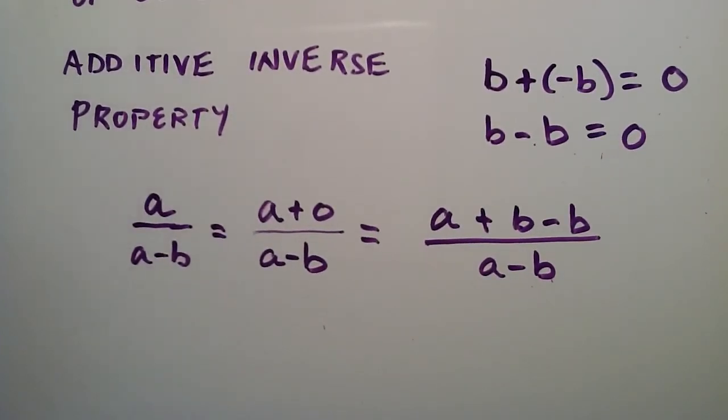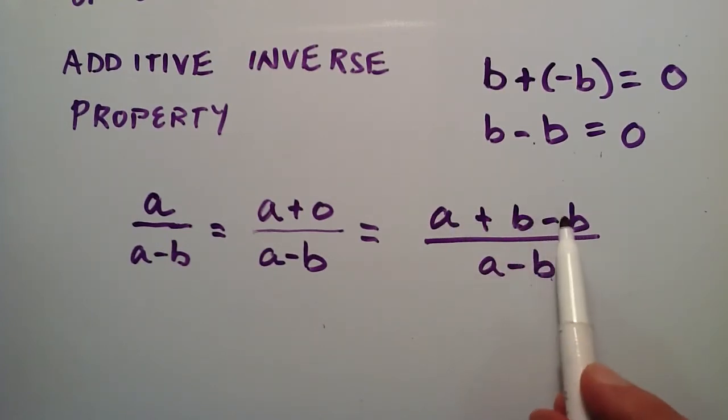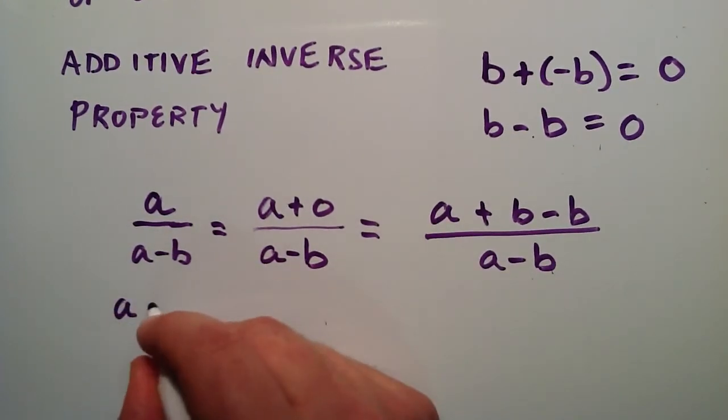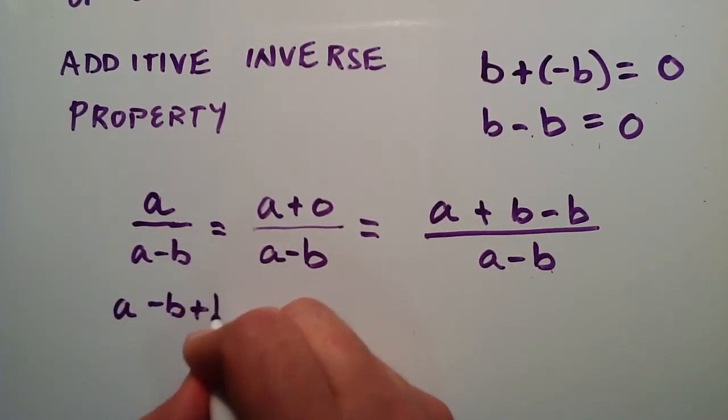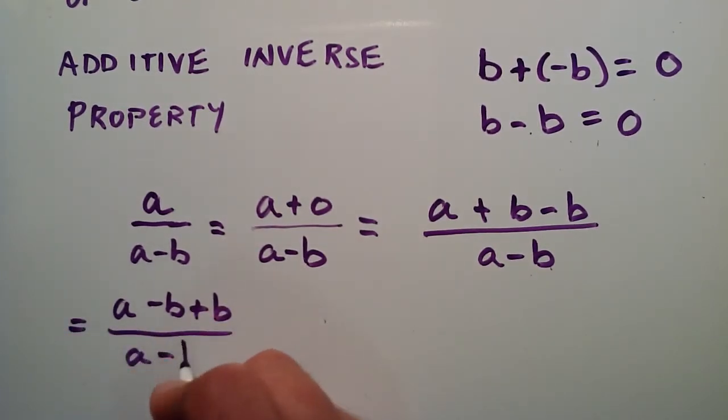So it's starting to look a little bit different. So now by the commutative property of addition, I'm going to change the order of these two terms. And I can do this by the commutative property of addition. So a minus b plus b divided by a minus b.